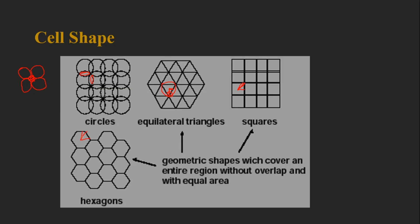In a hexagonal shape, the distance from the center is almost equal in all directions. That is the reason we use a hexagonal cell for theoretical calculations — whether we use an omnidirectional or directional antenna, the distance from the center is approximately the same in every direction, and this does not produce interference issues.